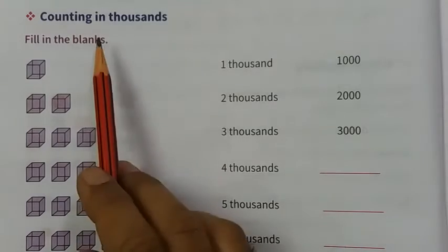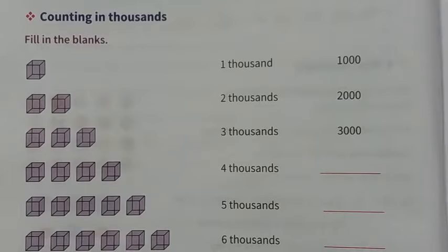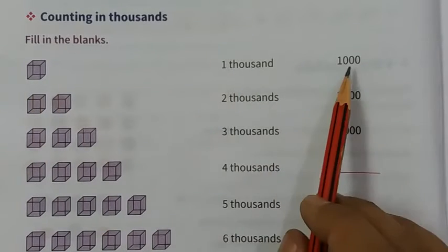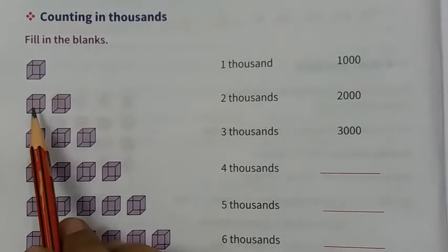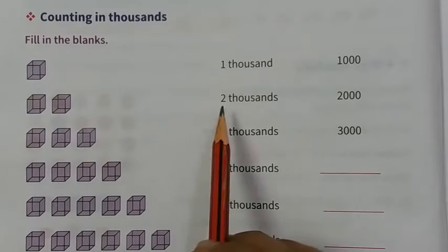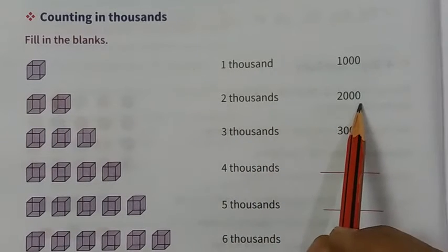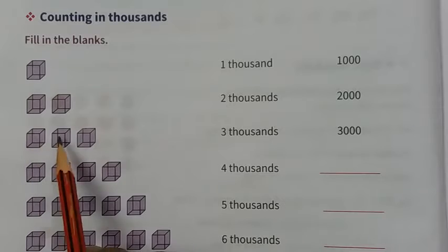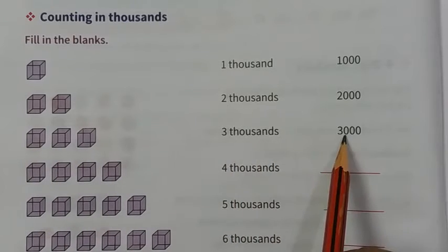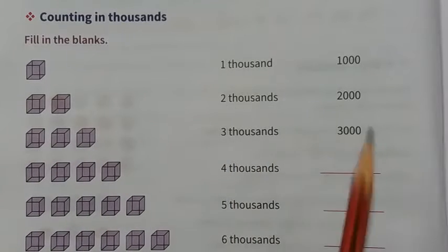Now counting in thousands. Fill in the blanks. Here it is 1000, so write here 1000. 1000 plus 1000 is equal to 2000. You can write here 2000. 1, 2, 3 equals 3000, so write here 3000.